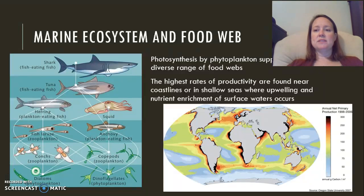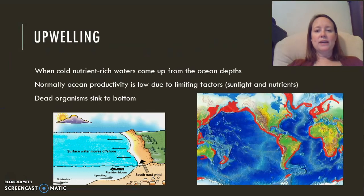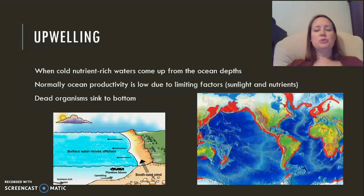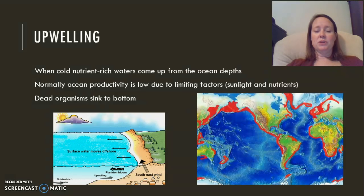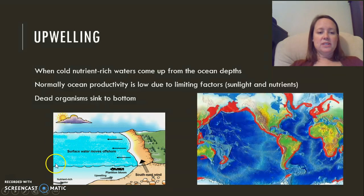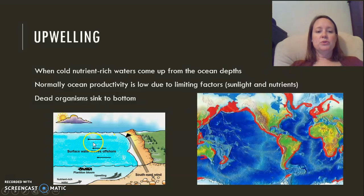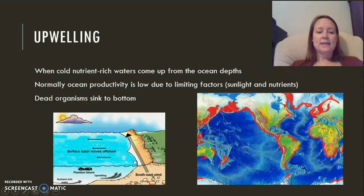The reason for this is because of nutrient upwelling. Upwelling is when cold, nutrient-rich waters come up from the ocean depths. The limiting factor for shallow areas is usually nutrients because you get plenty of sunlight. We need the nutrients that have sunk to the ocean floor, because when organisms die their remains sink. When the surface water moves offshore it's replaced by the colder bottom water that rises.